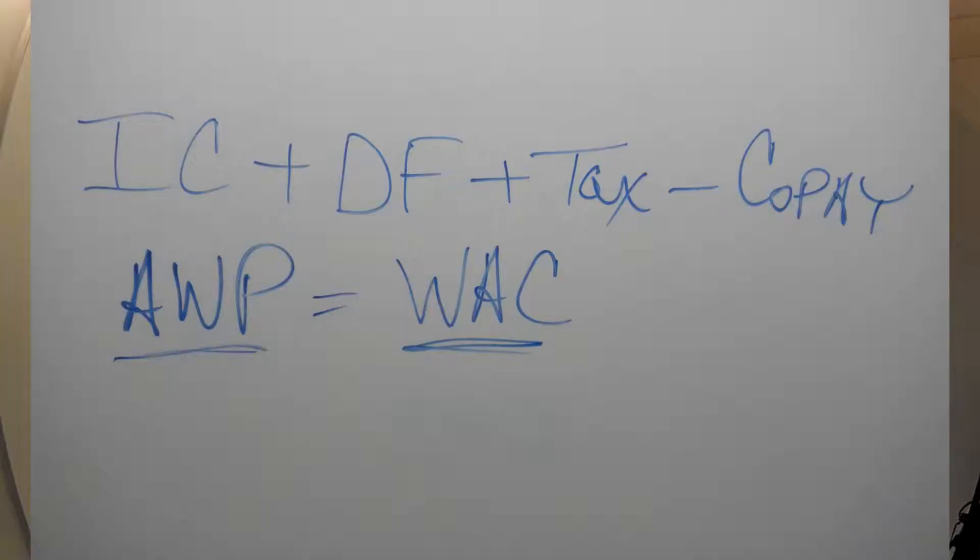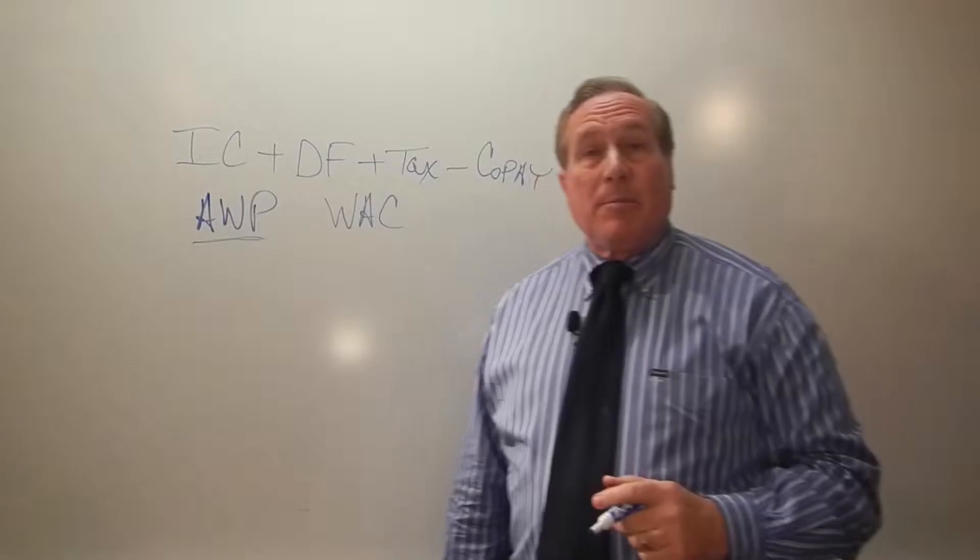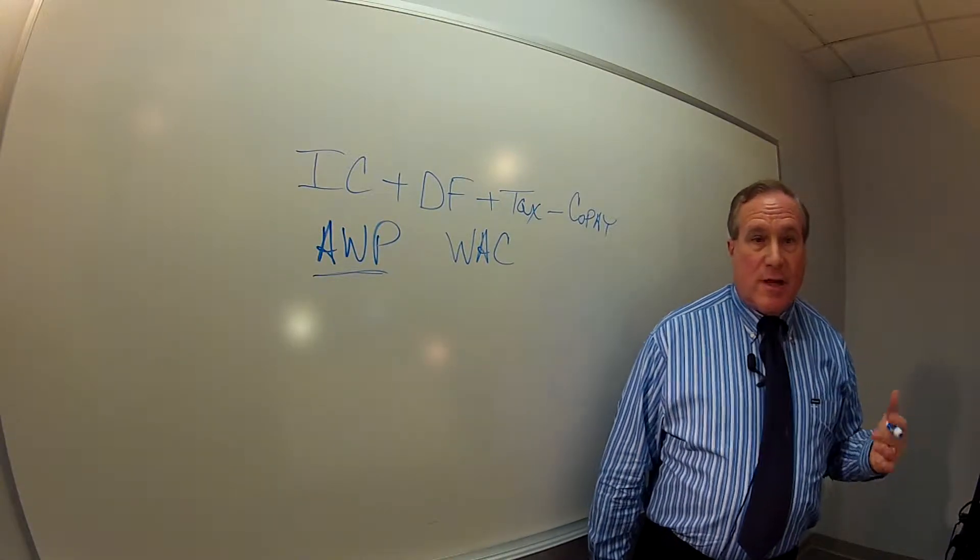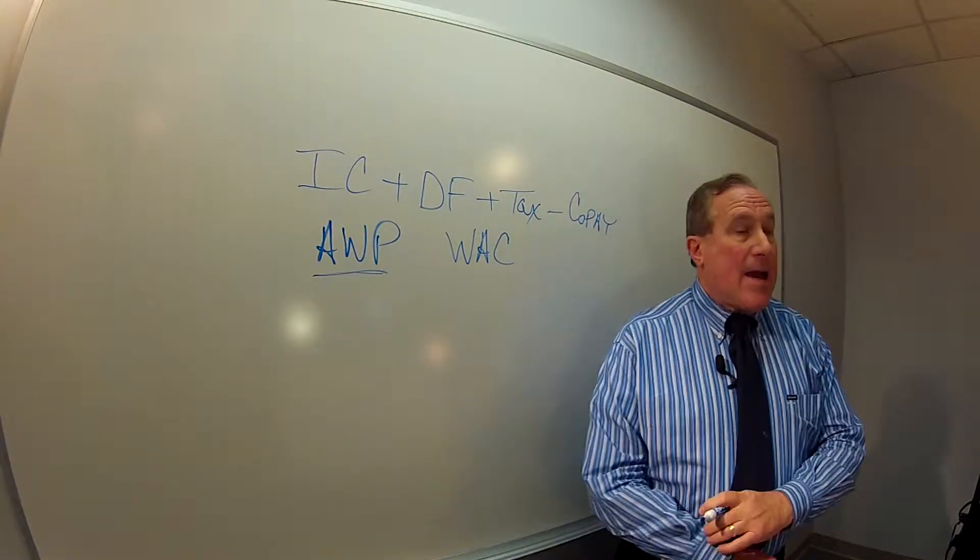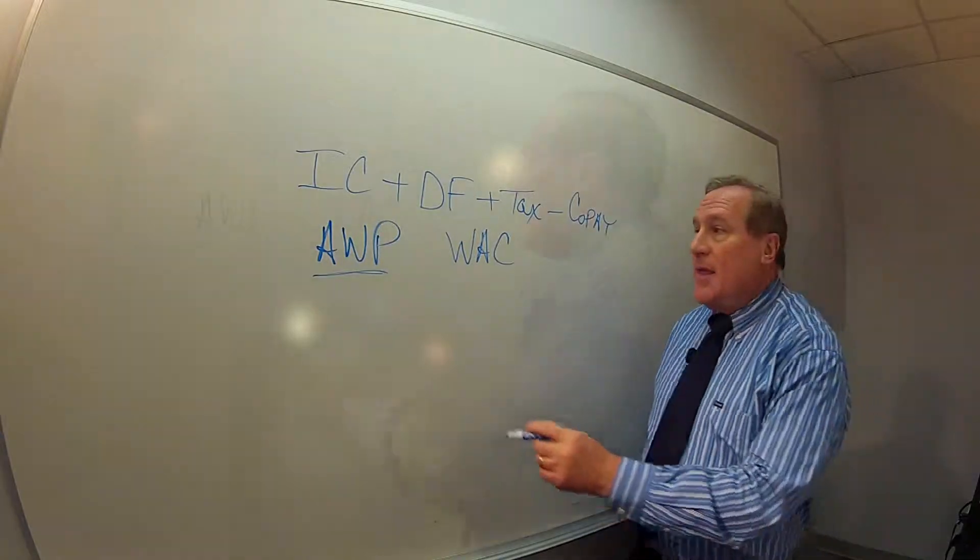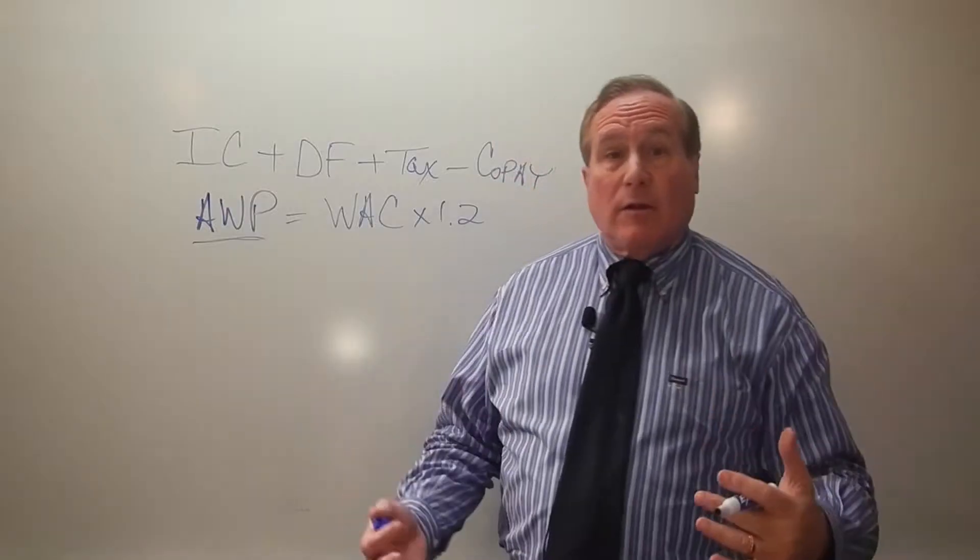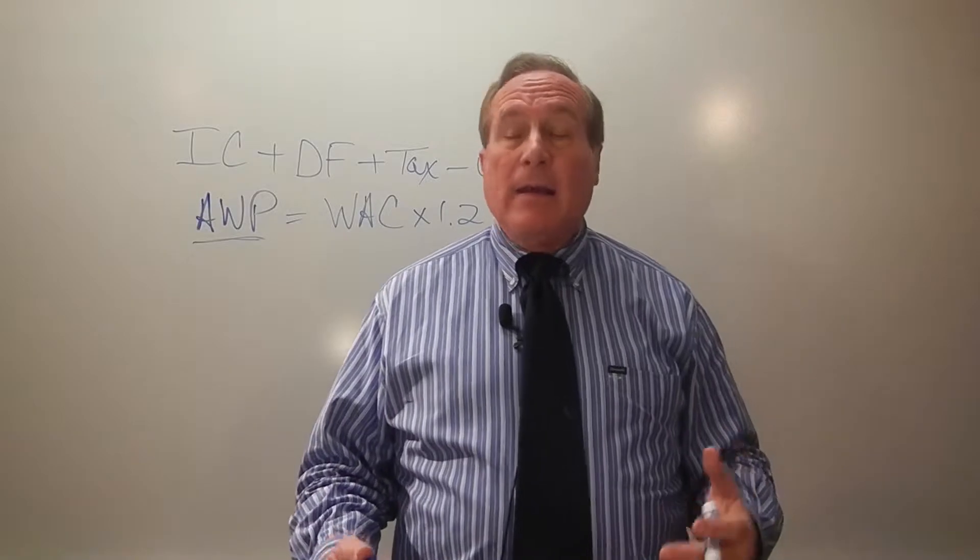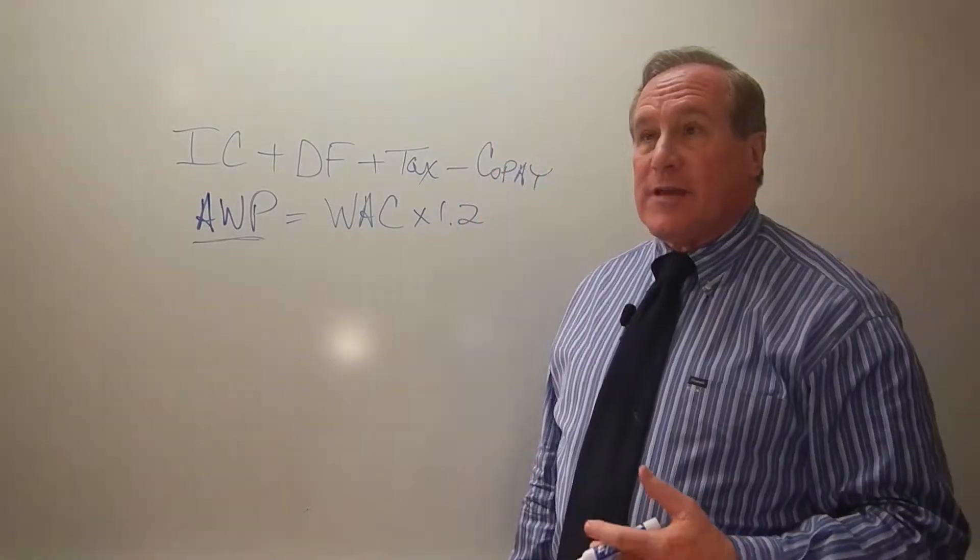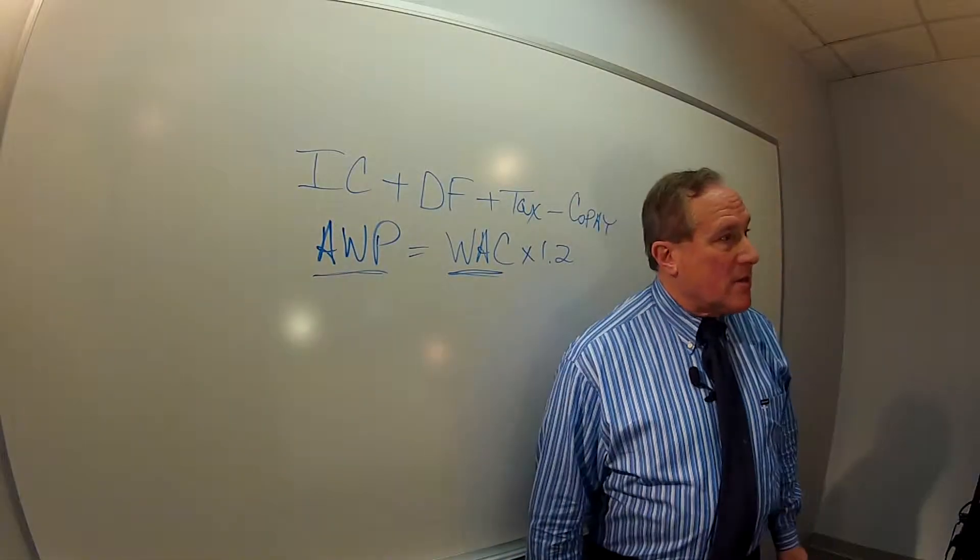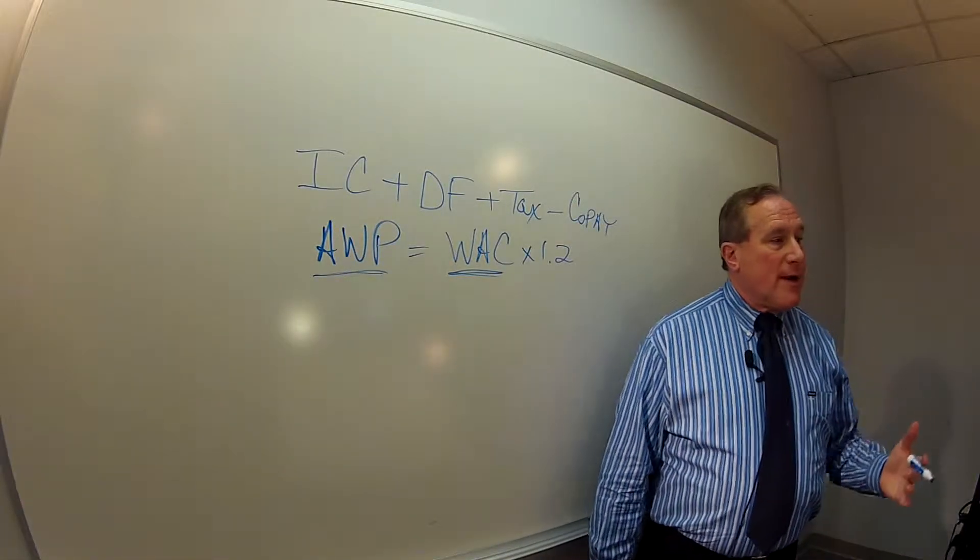There have been multiple options. One is the wholesale acquisition cost, which presumably is a better number than AWP. And since September 26th of 2009, AWP has had a definition in law. That definition is WAC times 1.2 or 120% of WAC. So there is some sort of legal definition to arrive at it, but not all manufacturers have to use that. However, many and most manufacturers do publish a wholesale acquisition cost.